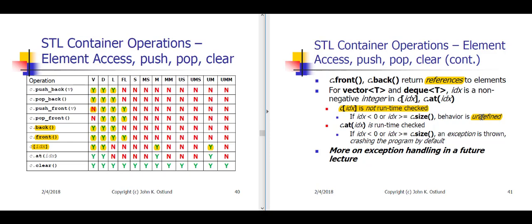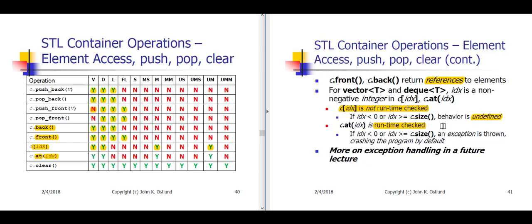If you want to do careful checking that the subscript you're using is within the bounds of your vector or deck, there's a dot at member function that you give an index to — an integer subscript in the case of a vector or a deck — and that is checked at runtime. If the index you use is bogus, that is, it's outside of the range of values for a vector or deck, this will throw an exception, which will crash your program. We will get into the details of exceptions and how you handle them in lecture 16.